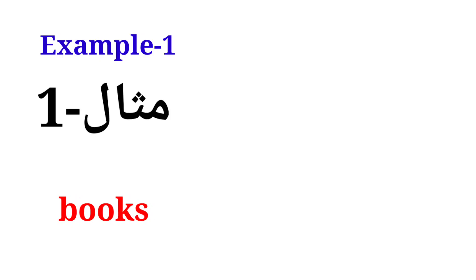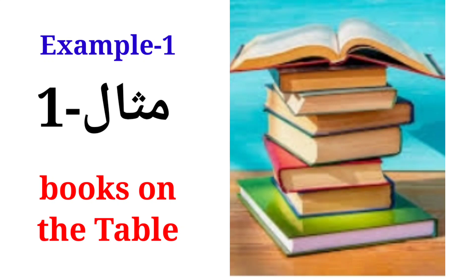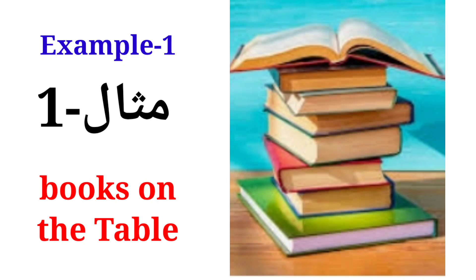Now we explain this law with examples. Example 1: books on the table. In the diagram, books are lying on the table. The weight of the books acts vertically downward — this is called the action of the books on the table. The table puts a reaction on the books vertically upward, which is called the reaction of the table. Both action and reaction are equal but opposite in direction.